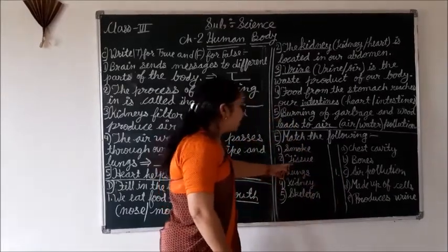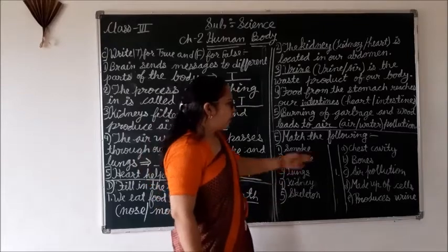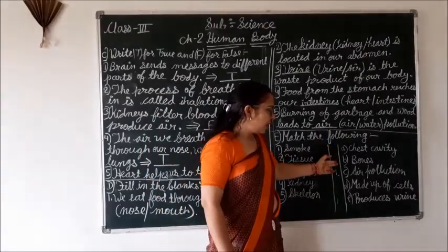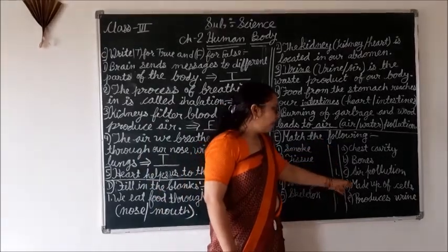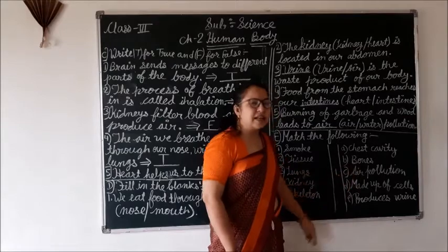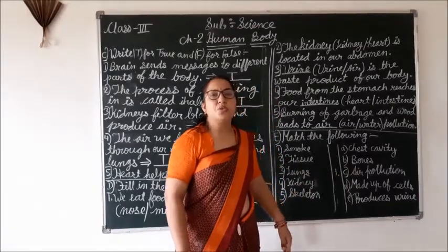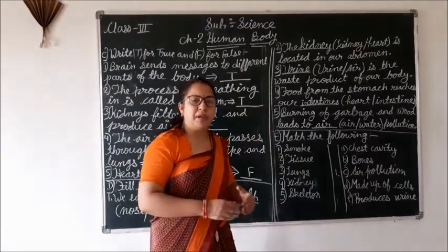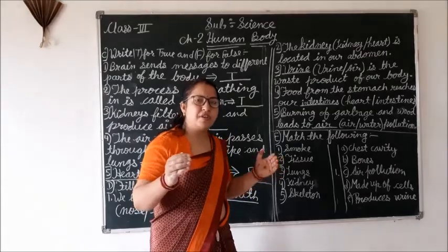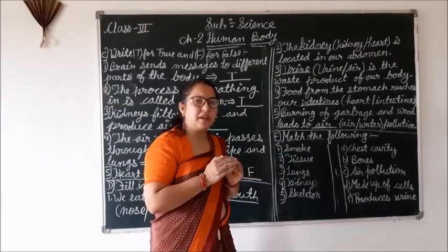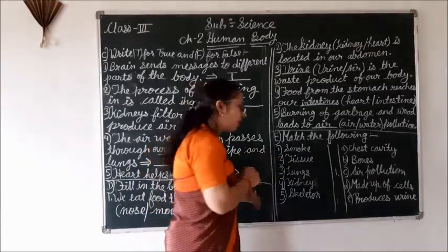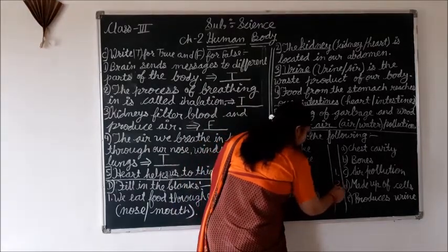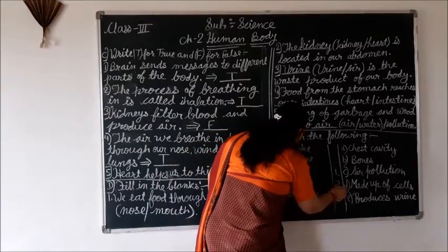Next: tissue. Tissue is made up of cells — millions of cells together form tissue. So tissue matches with: made up of cells.